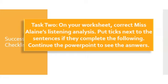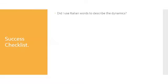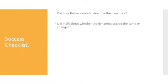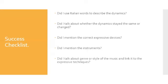Here are the questions you need to ask when marking my analysis: Did I use Italian words to describe the dynamics? Did I talk about whether the dynamics stayed the same or changed? Did I mention the correct expressive devices? Did I mention the instruments? And did I talk about genre or style of the music and link it to the expressive techniques? Well girls, you'll find that yes I did.